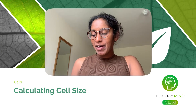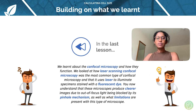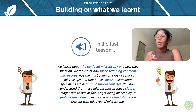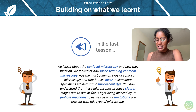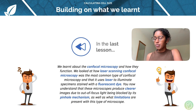Hello there and welcome to this BiologyMind A-level tutorial on calculating cell size. In our last lesson we learned about confocal microscopy and how they function. We looked at how laser scanning confocal microscopy was the most common type, using lasers to illuminate specimens stained with fluorescent dye. These microscopes produce clearer images due to out-of-focus light being blocked by the pinhole mechanism, as well as the limitations present with this type of microscope.